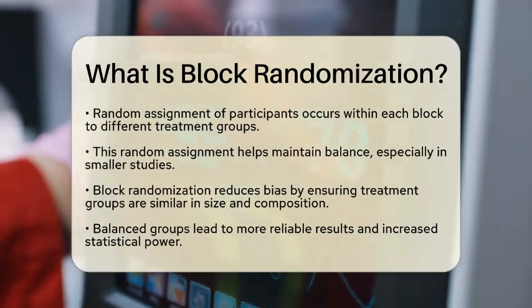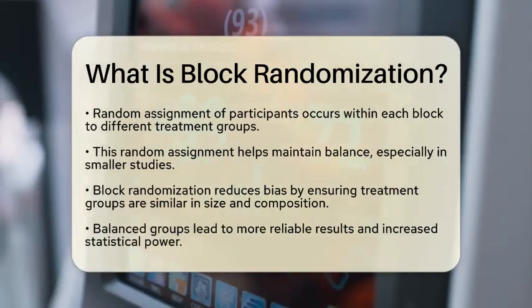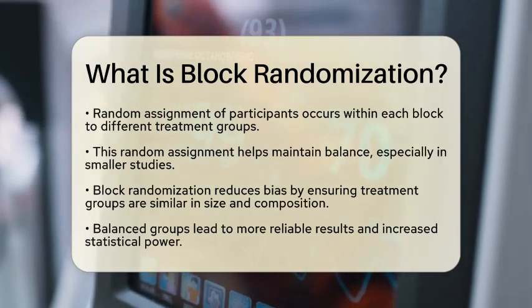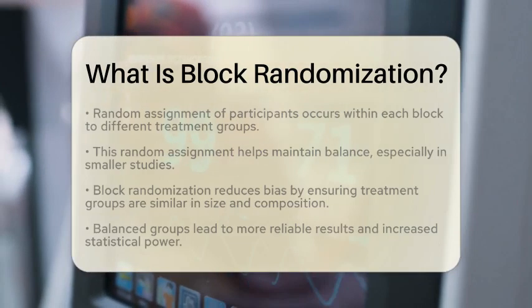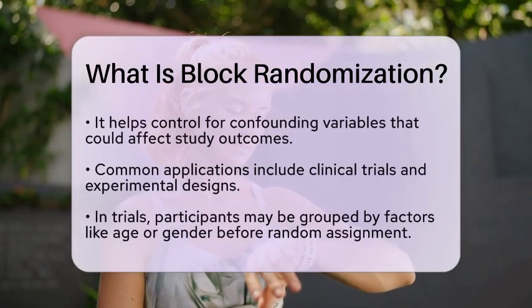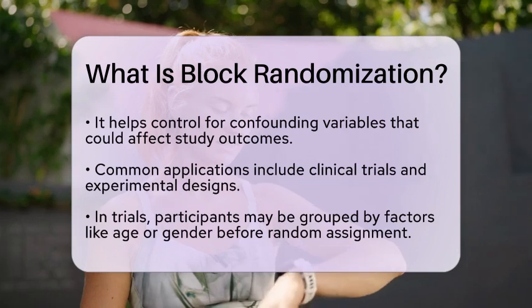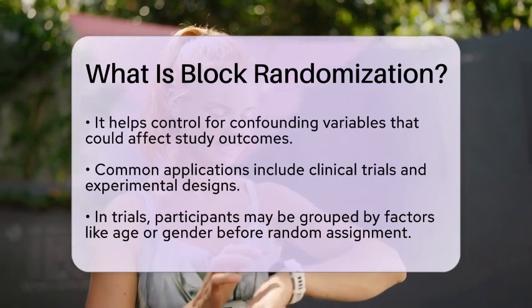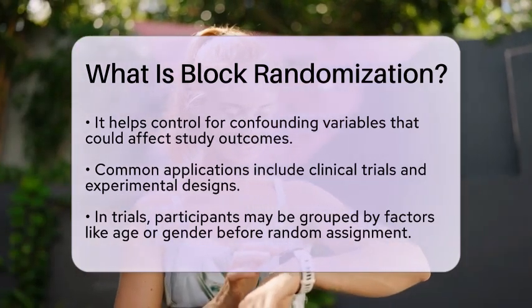Block randomization also helps control for confounding variables — variables that could affect the study's outcomes. By keeping groups balanced, researchers can minimize the impact of these variables.